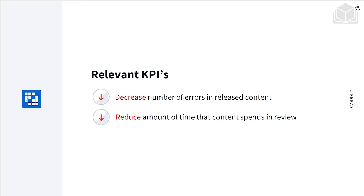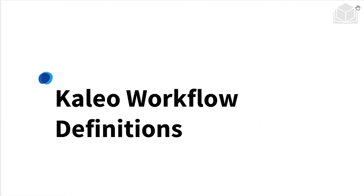The key performance indicators for this are: we want to decrease the number of errors in released content, as well as reduce the amount of time that content spends in review. And here we are in our first section: Kaleo workflow definitions.